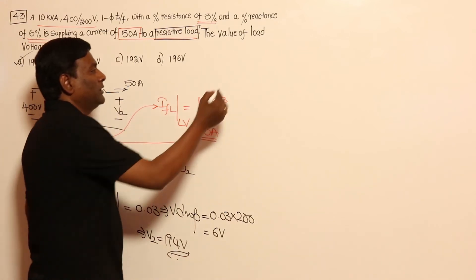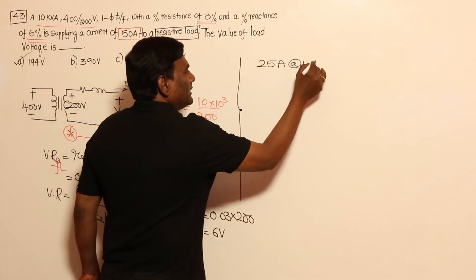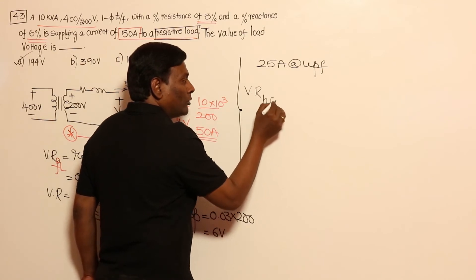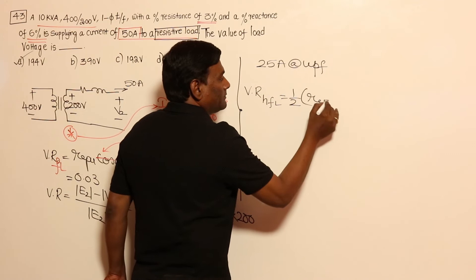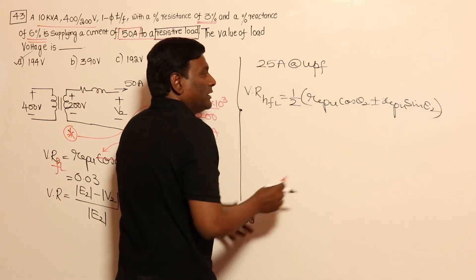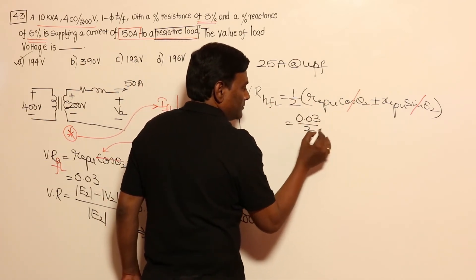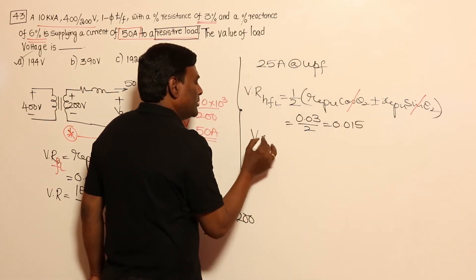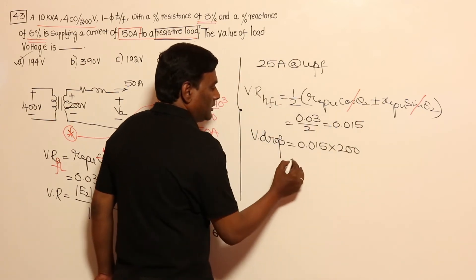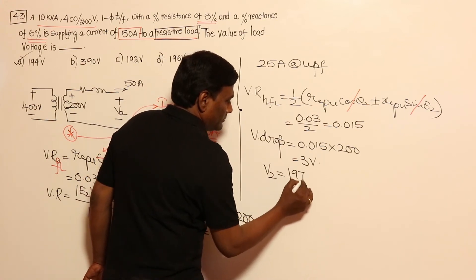For example, if instead of 50 amperes they had given 25 amperes with the same resistive load, then I would use voltage regulation at half full load = (1/2) × (Re per unit × cos θ₂ ± Xe per unit × sin θ₂). With unity PF, sin θ₂ = 0 and this becomes 0.03/2 = 0.015. Voltage drop = 0.015 × 200 = 3 volts, so V2 = 200 − 3 = 197 volts. Always check the load level before applying the equation.